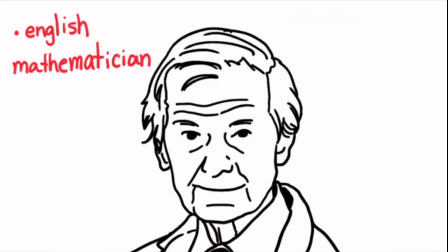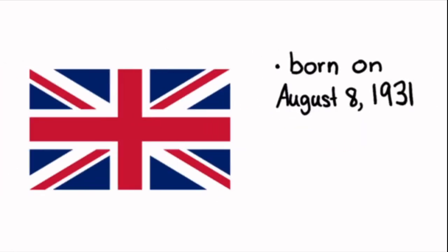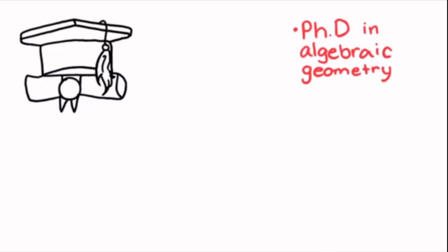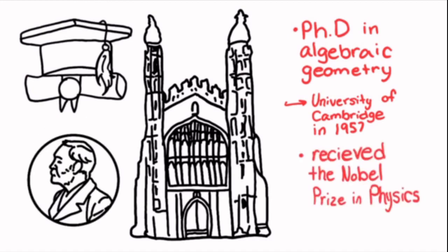Roger Penrose was an English mathematician and physicist born on August 8, 1931 in Colchester, England. He obtained a PhD in algebraic geometry from the University of Cambridge in 1957 and received the Nobel Prize in Physics.